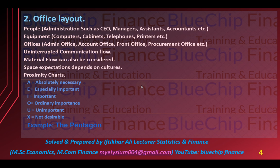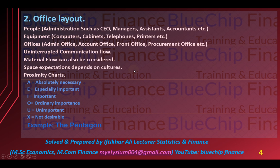Doosra jo hai wo office layout hai. Office layout jaise ke naam se zaahir hai ke administration is involved in office layout. So people — administration such as CEO, managers, assistants, accountants, etc. — equipments bhi is ke andar pai jate hain: computers, cabinets, telephones, printers, etc. Offices mein admin office, account office, front office, procurement office etc. aate hain. Uninterrupted communication flow aur material flow bhi consider kiya ja sakta hai.